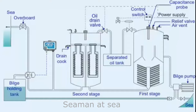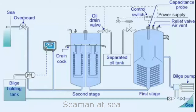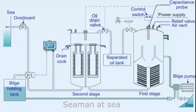The bilge pump delivers clean sea water to the first stage of the separator through the inlet valve. The vent is kept open until all the air is removed from the separator and water issues out. Oily water is then delivered to the separator.